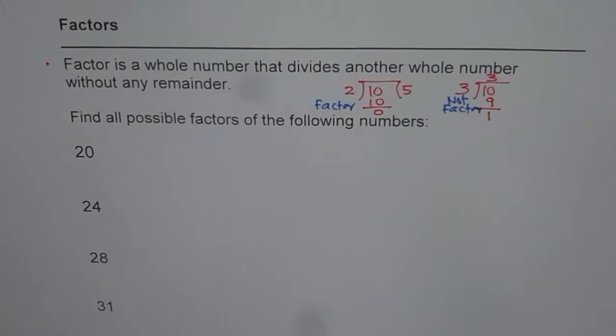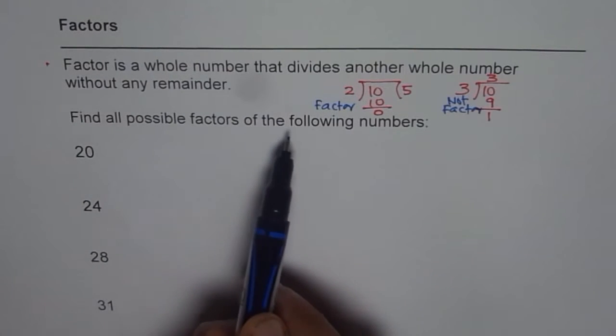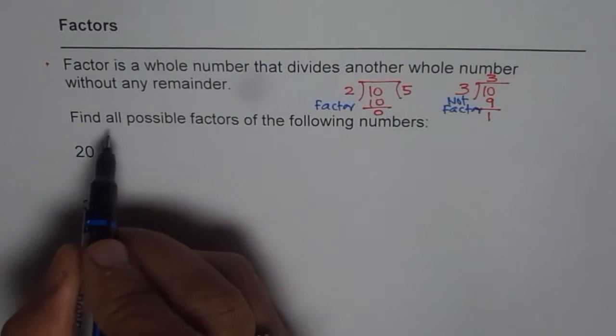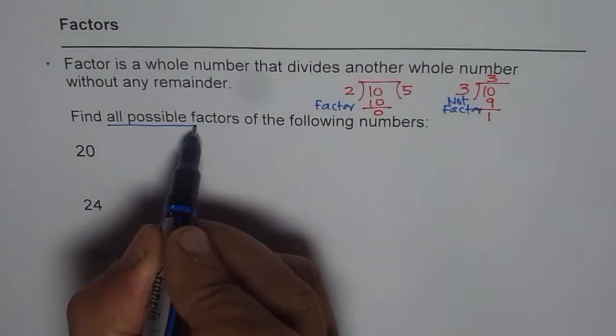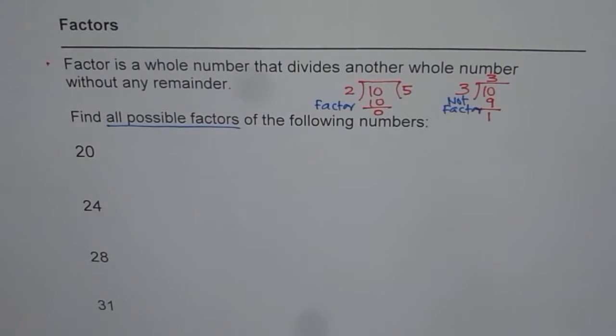Now let us further look into a few more examples. Find all possible factors of the following numbers. The critical thing here is all possible factors, so you should not exclude any number which is a factor. Let us begin with 20.